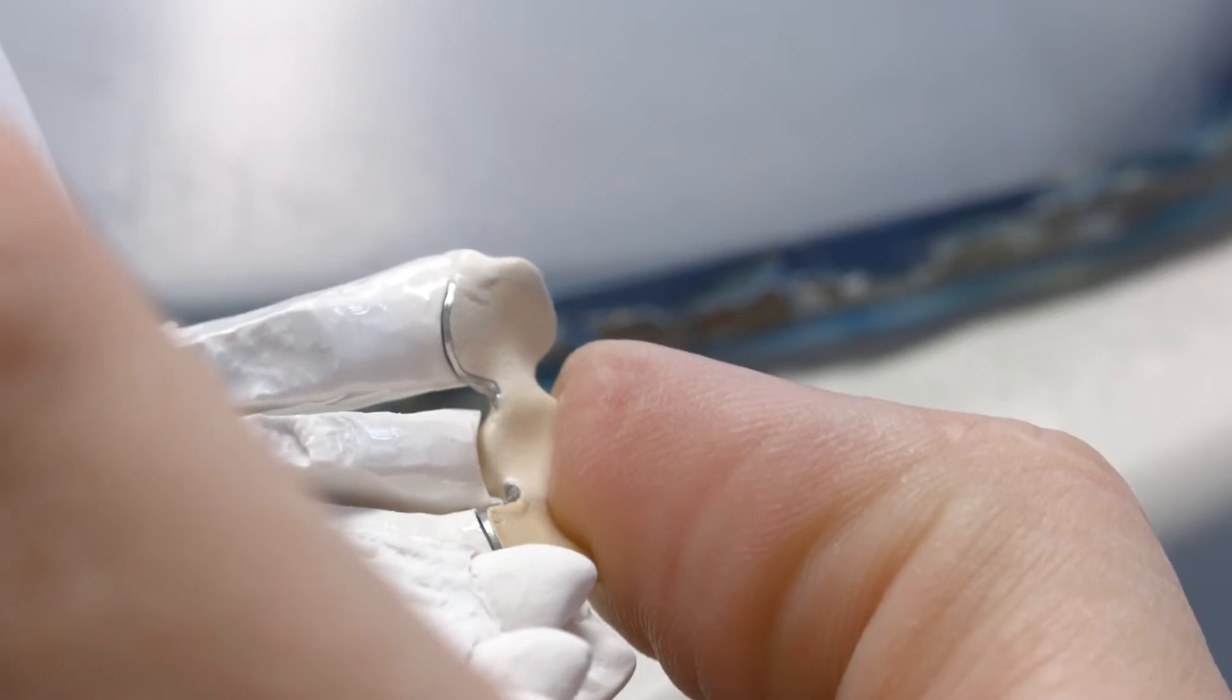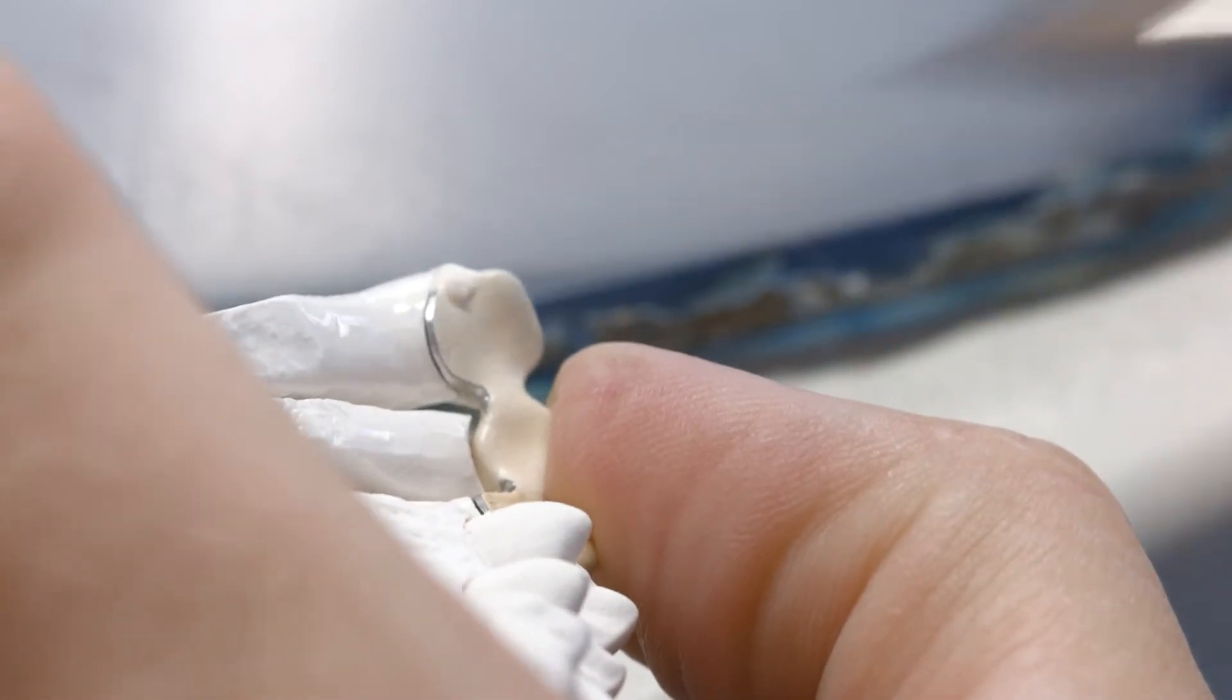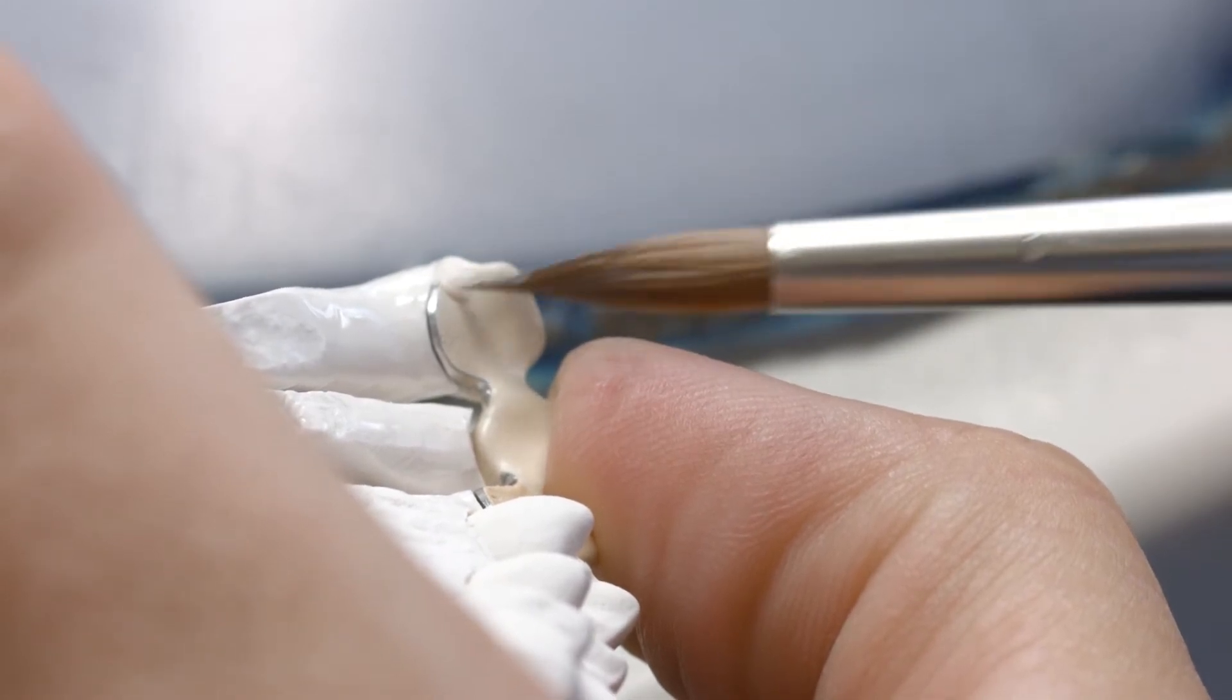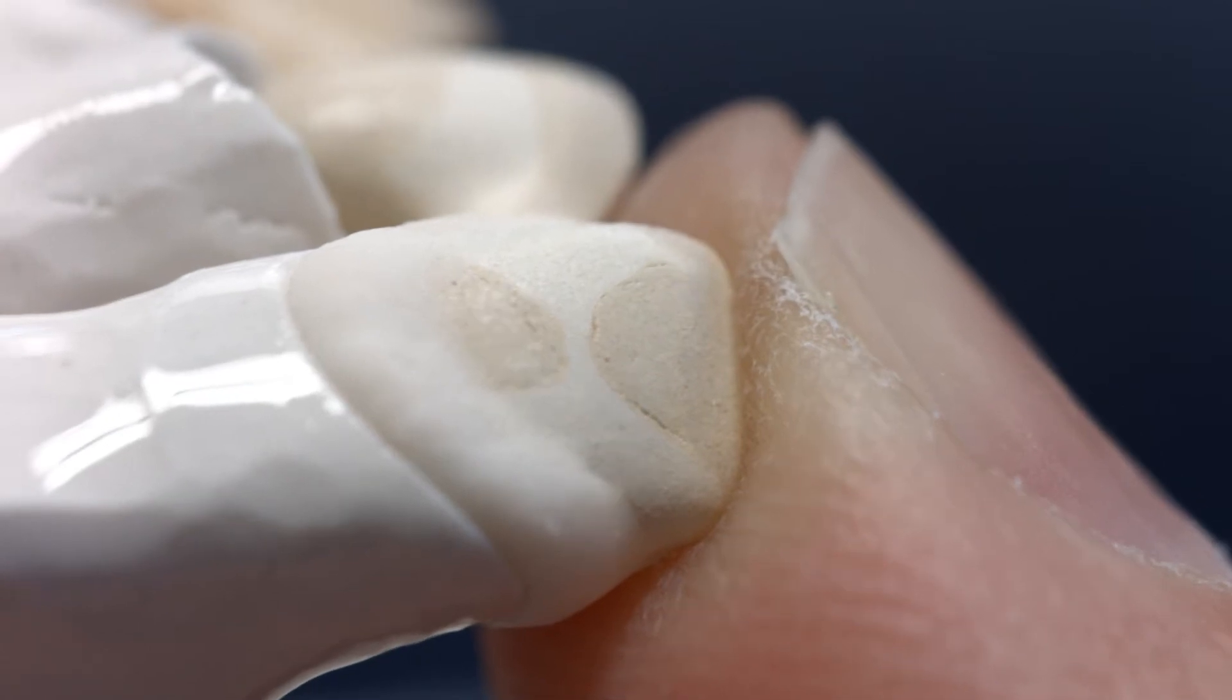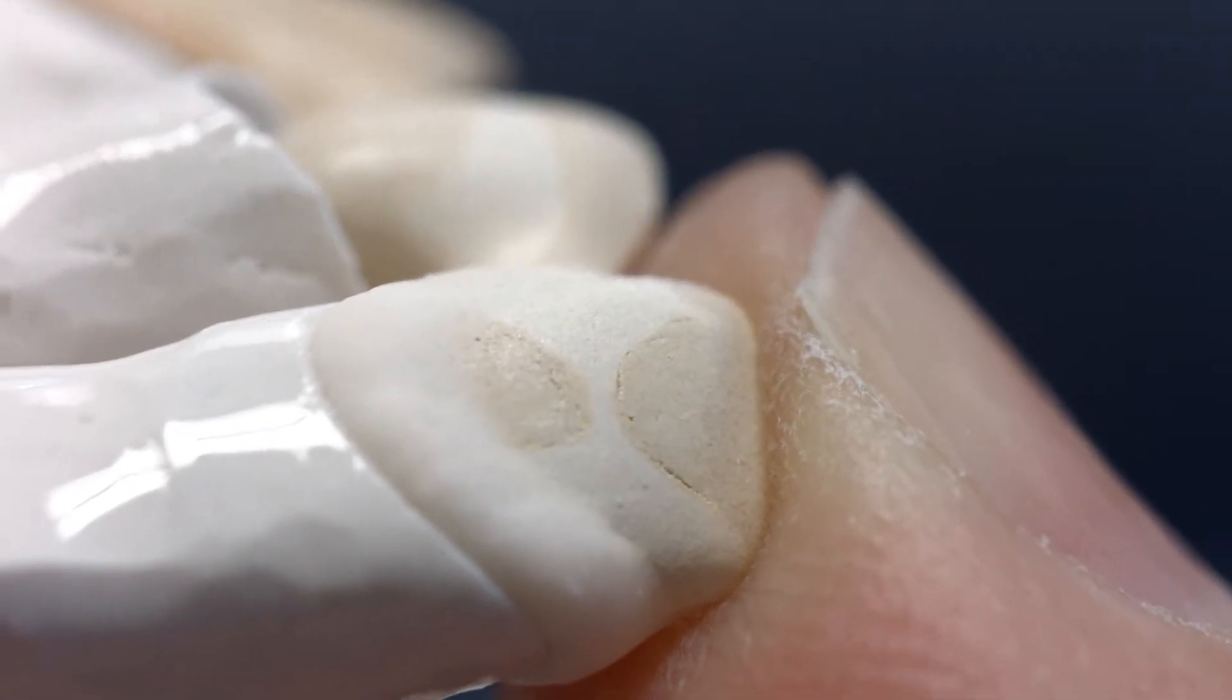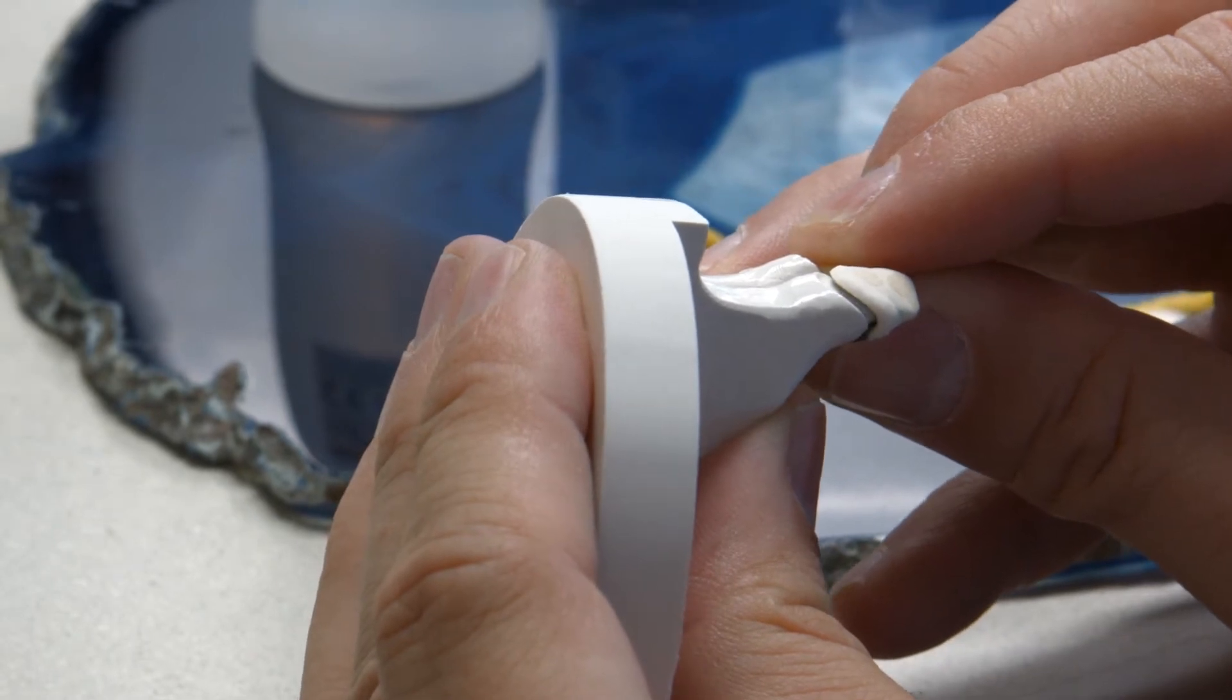If desired, you can apply individualized characteristics in the cervical areas with IPS Style Ceram Intensive Margin. Subsequently, dry the ceramic material with a warm stream of air. Then, carefully remove the framework with the dried margin material from the die.